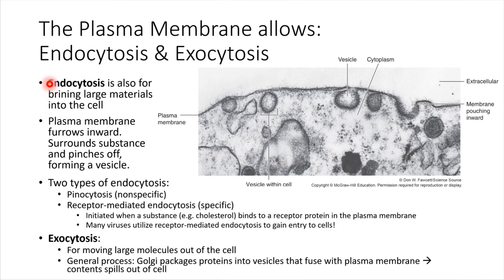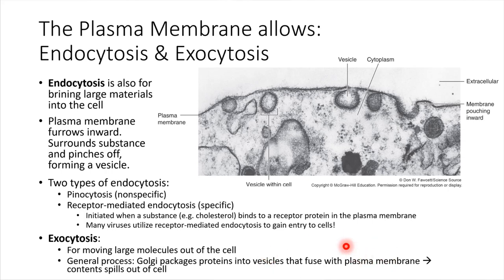Just the opposite of endocytosis would be exocytosis. This is how cells can ship things out of the cell. Generally it starts with a vesicle that forms at the Golgi. The Golgi packages something up into a vesicle and then that vesicle moves outwards along the cytoskeleton, walks over to the plasma membrane and fuses with it. That results in the contents of the cell being spilled outwards, moving in just the opposite direction.